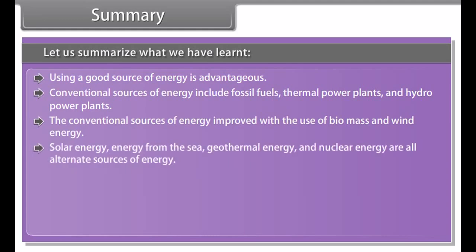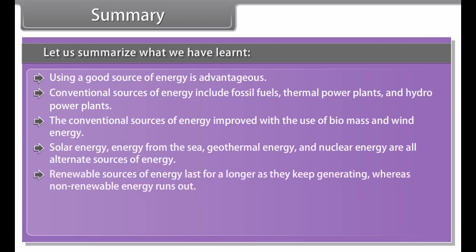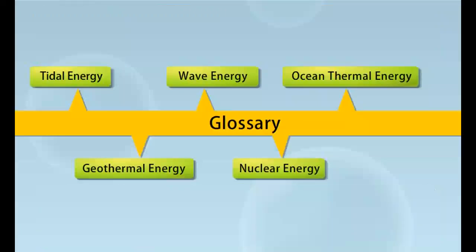Nuclear energy uses sustained nuclear fission to generate heat and electricity. It is a sustainable energy source that reduces carbon emissions. Nuclear energy is generated by a process called nuclear fission. In this process, the nucleus of heavy uranium, plutonium, or thorium is bombarded with low-energy neutrons.